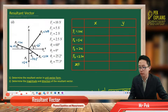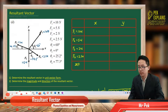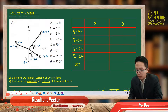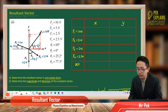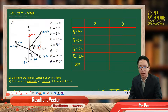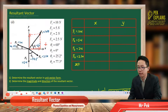So we look at F1 and resolve it into X and Y components. F1 has X and Y components. For the X component, it has angle theta, so we use cos theta. Don't forget the direction — going to the right is positive, going to the left is negative, going upward is positive, going downward is negative.